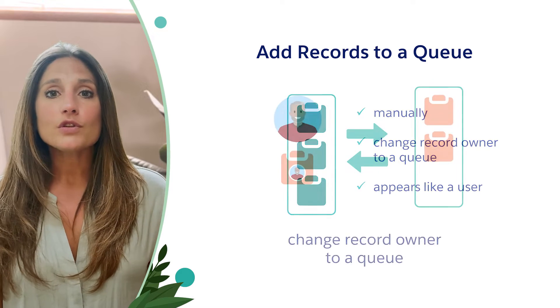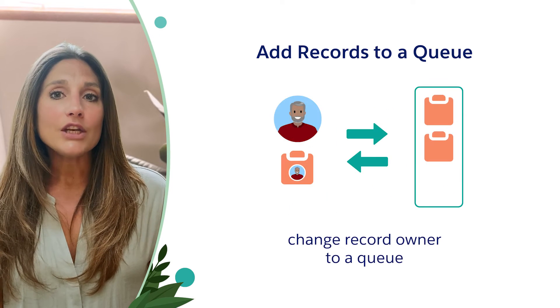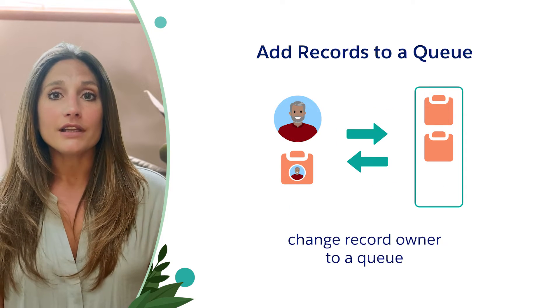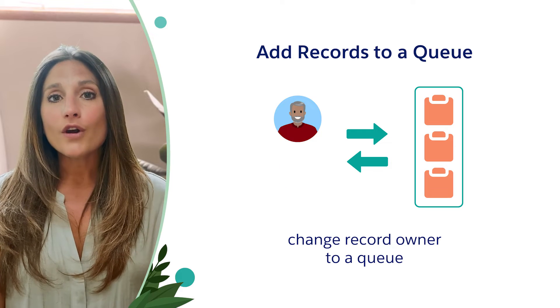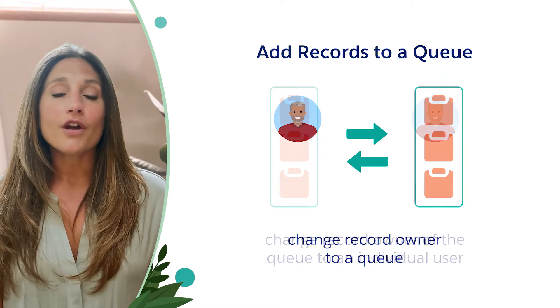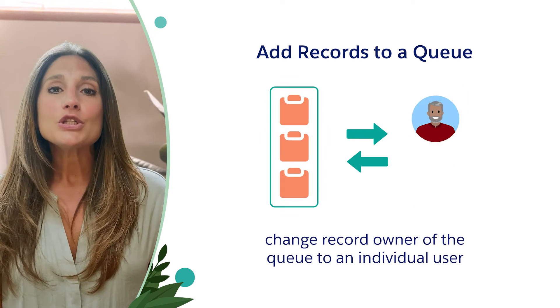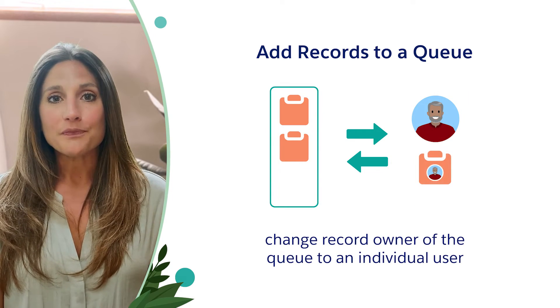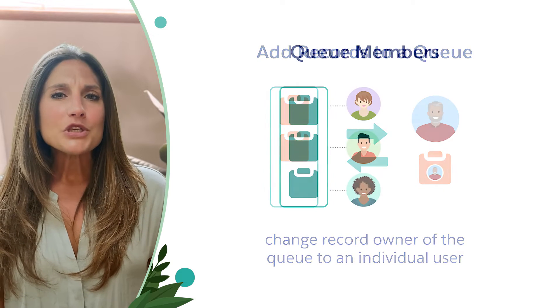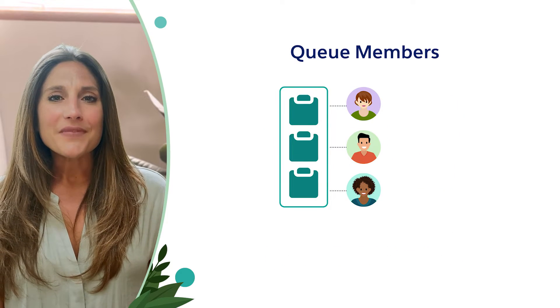For example, change the lead owner of the lead to a queue, or the lead owner of a queue to an individual user. So who can join a queue?